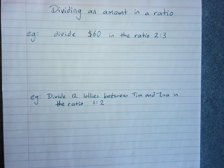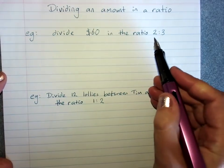Dividing an amount in a ratio. So for example, divide sixty dollars in the ratio two to three.